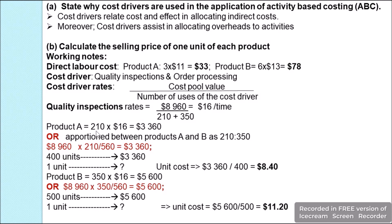For product A, 210 quality inspections are required. So 210 × $16 = $3,360, which is the amount apportioned to product A for quality inspection. We can also apportion using the ratio: $8,960 × 210 ÷ 560 = $3,360. Since we are producing 400 units of product A, the unit quality inspection cost is $3,360 ÷ 400 = $8.40.